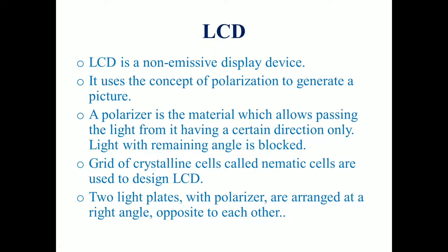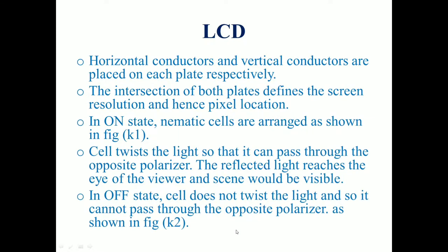A grid of crystalline cells called nematic cells are used to design LCD. Two light plates with polarizers are arranged at a right angle opposite to each other. Horizontal conductors and vertical conductors are placed on each plate respectively. The intersection of both plates defines the screen resolution and hence the pixel location.